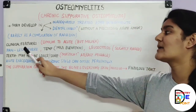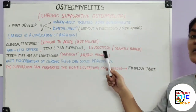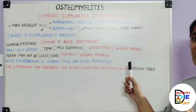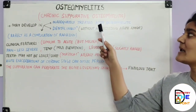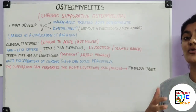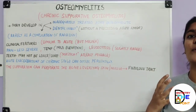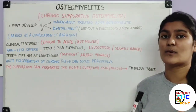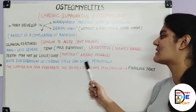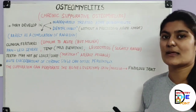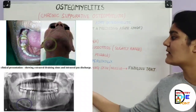The clinical features are similar to the acute form but milder. Pain is less severe, temperature elevation is mild, and leucocytosis is only slightly raised. Teeth may not be as loose or sore — mastication is at least possible. Acute exacerbations of the chronic stage can occur periodically, with signs and symptoms similar to those of the acute form.